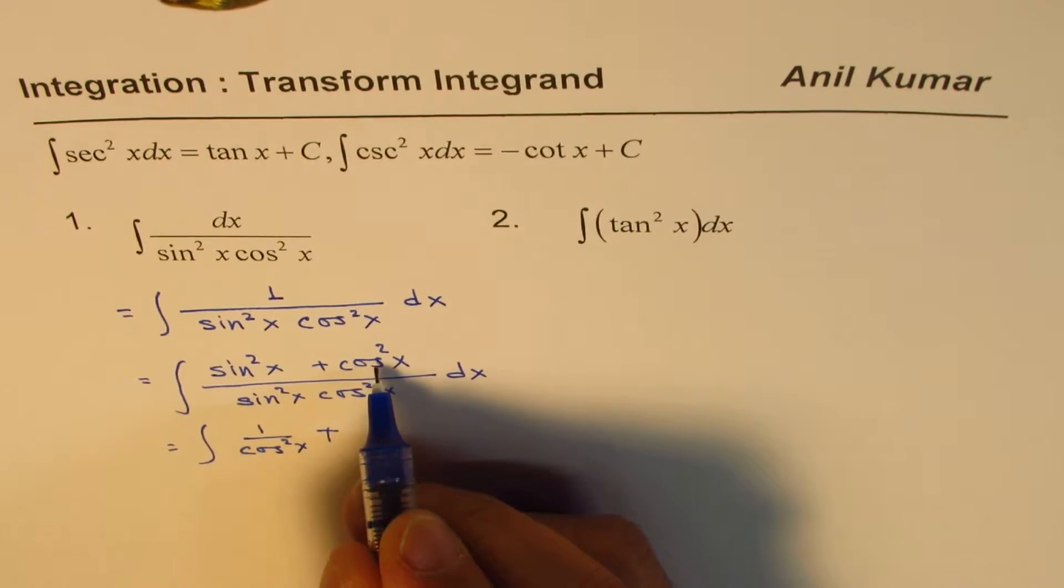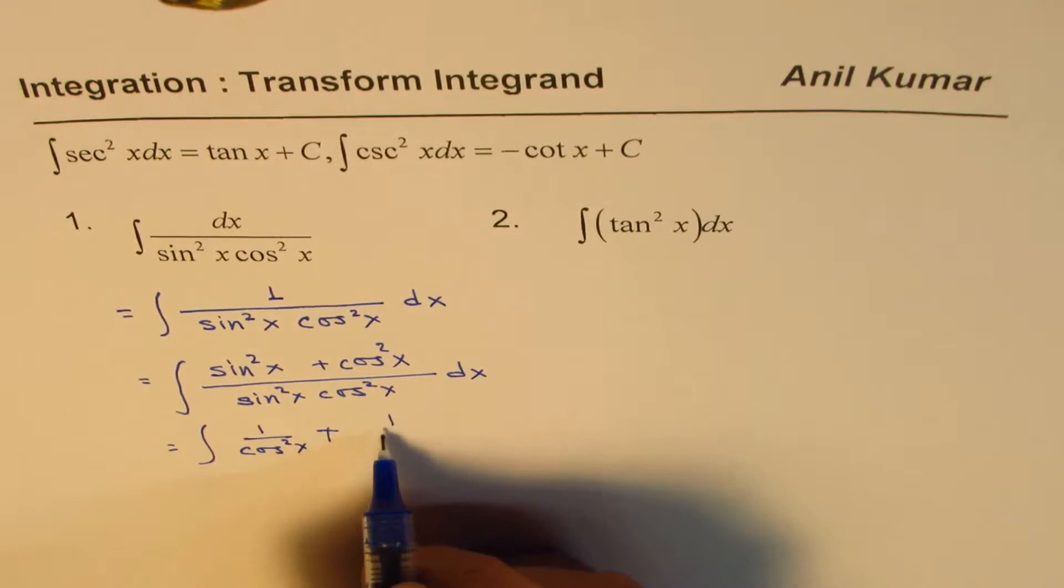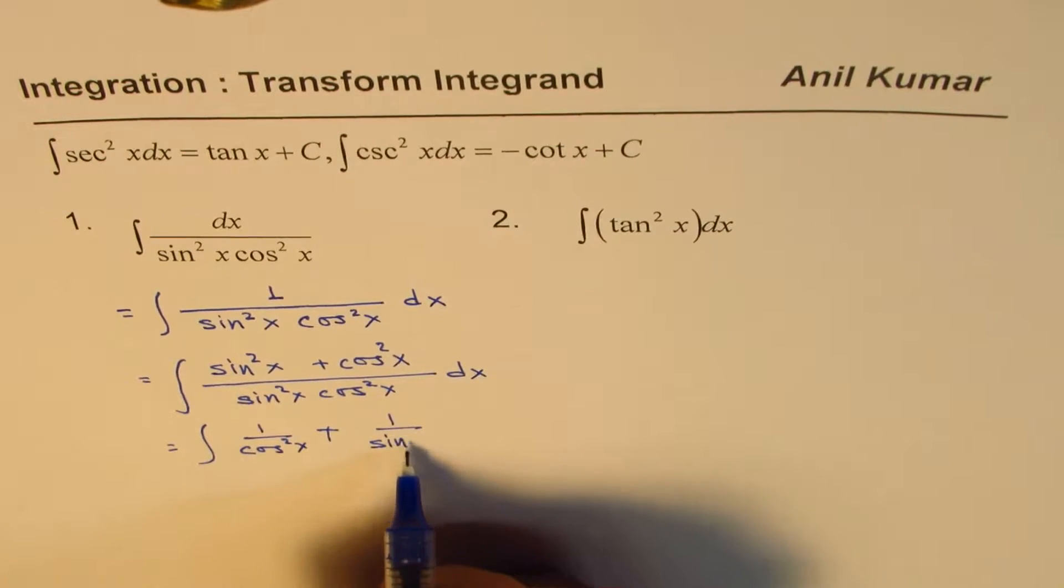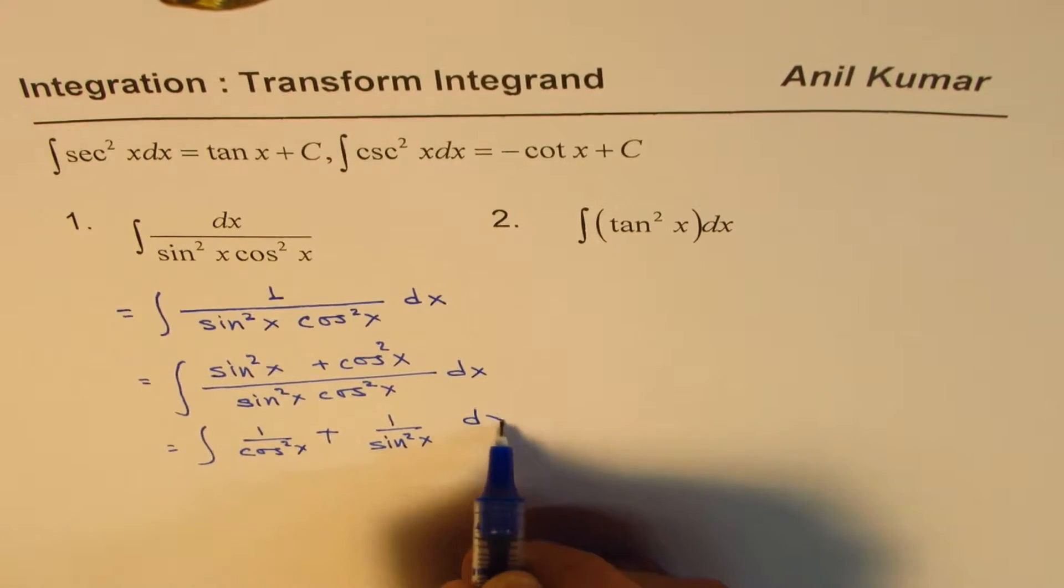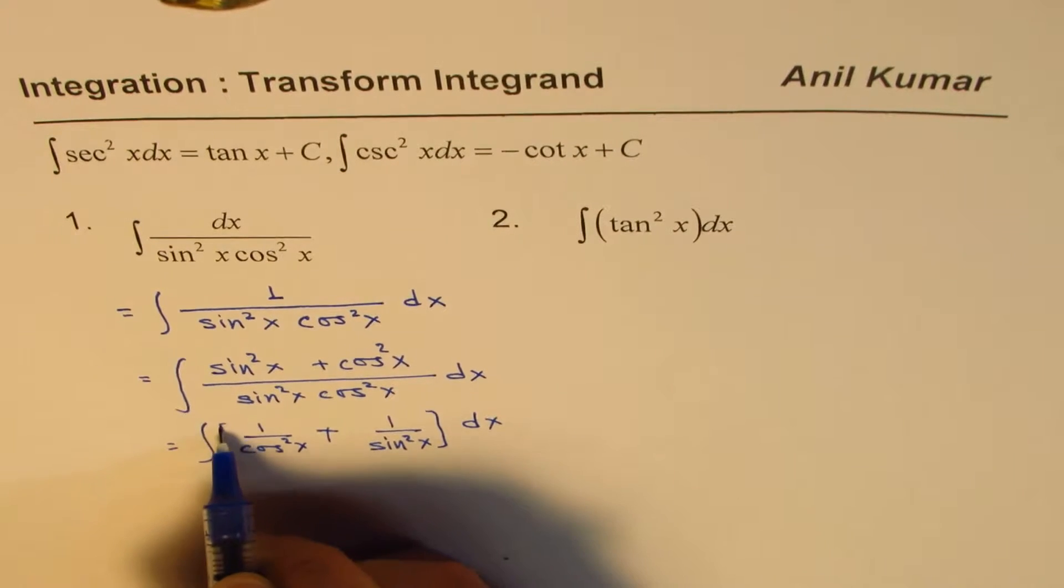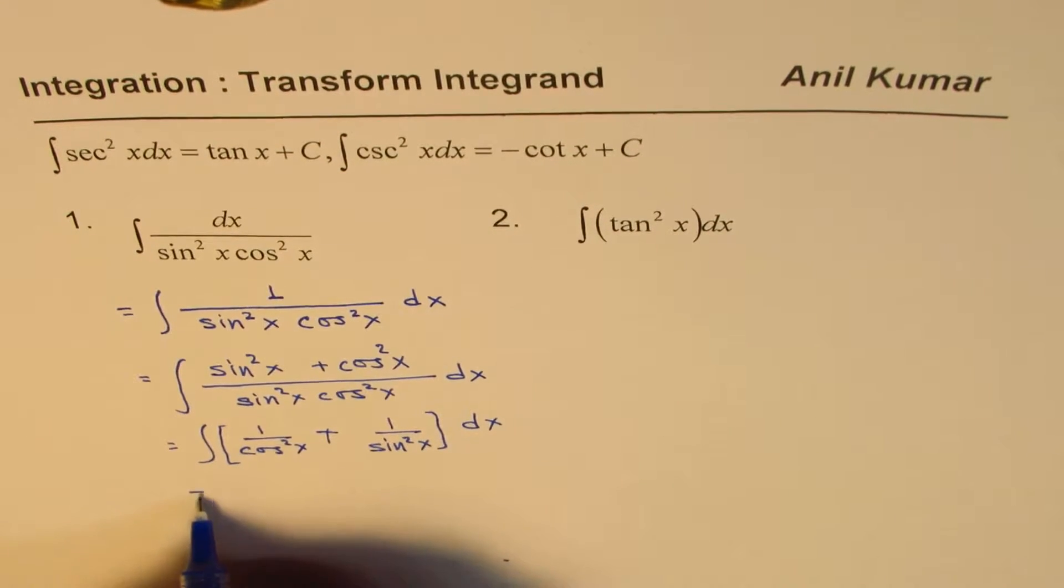Plus, in this case, cos square x over all this will give you one over sin square x. You may put them in brackets to be on safe side.